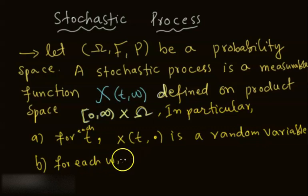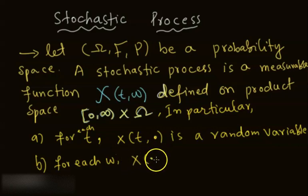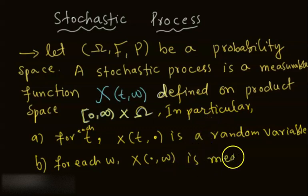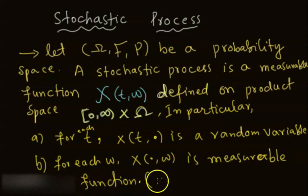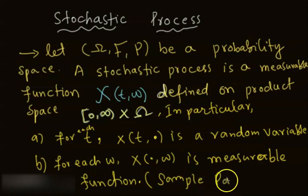And for each fixed ω — if you fix one particular ω — this function is a measurable function of time, and we call it a sample path.